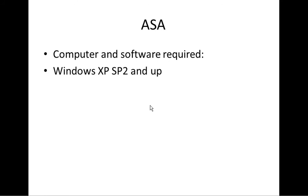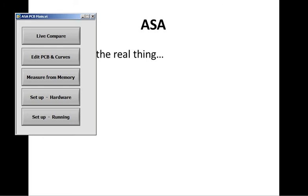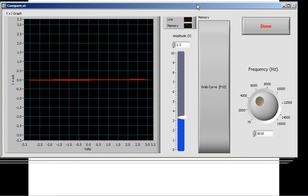Now let's see the real thing — how it works. Here is how the program starts. It asks you for a picture file; we'll see that later. Let's see Live Compare. Here you have the view of voltage applied to the circuit versus current. This shows the voltage peak applied to the circuit and the frequency. Right now we have an open circuit — no current flowing, and the voltage goes through the full range.